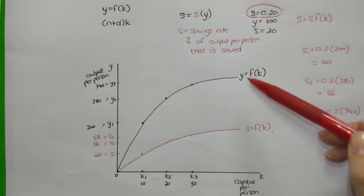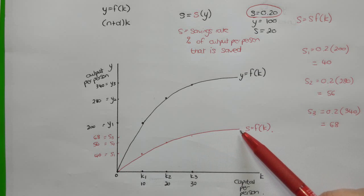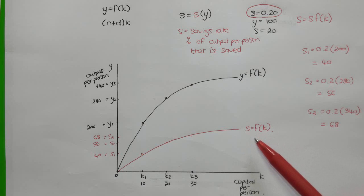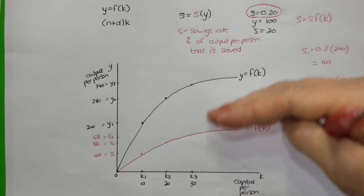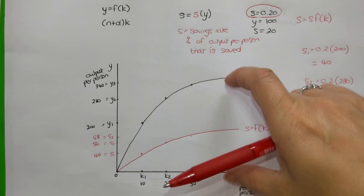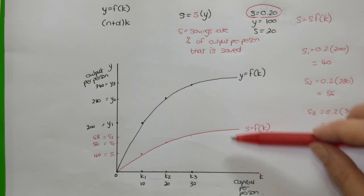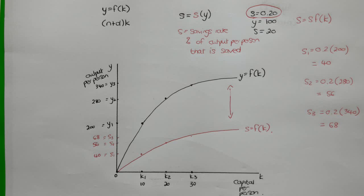So the second thing is that the savings function follows the slope of the production function — because output per person increases at a decreasing rate, and because we save a constant percentage of output per person, savings per person also increases at a decreasing rate. The third thing to take note of is that this savings function lies below the production function. It lies below because part of our output per person is saved, but we're not saving all of it — in this example, we were saving only 20% of output per person. What do you think the gap between the production function and the savings function represents? That's something you should think about.